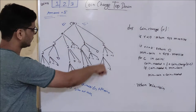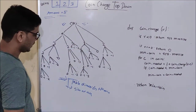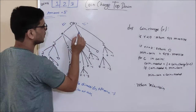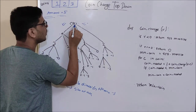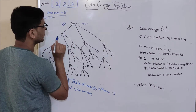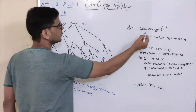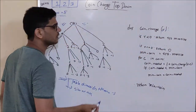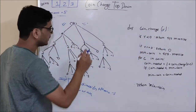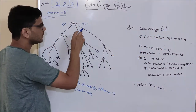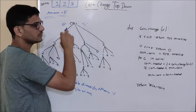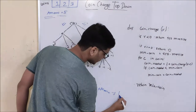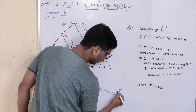So, this is my recursive tree and now let's find the table dimension. I have only one variable here, that is V — and what is V? Amount. It is the only thing which is varying. So my table dimension will be 1.